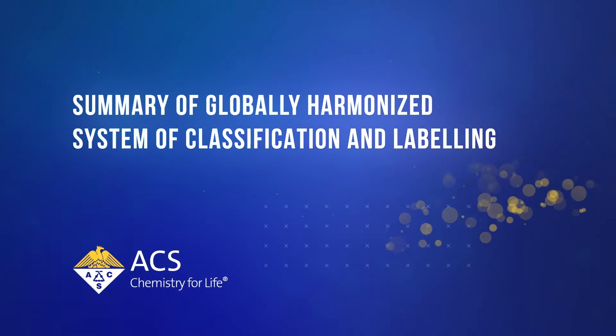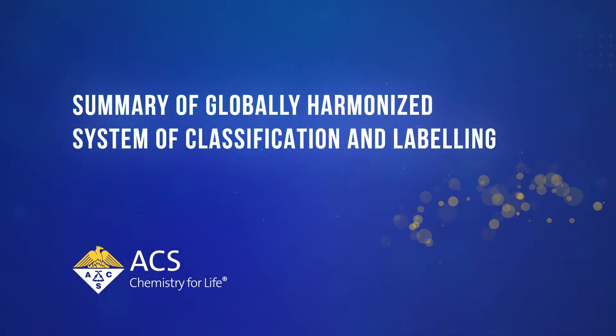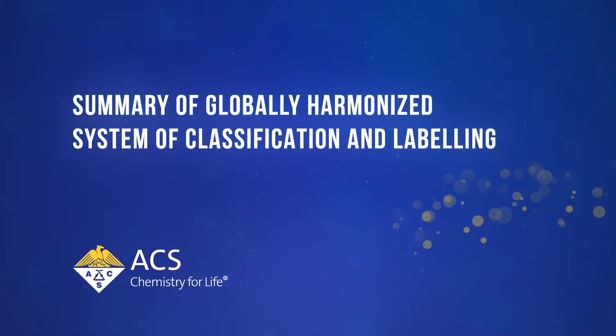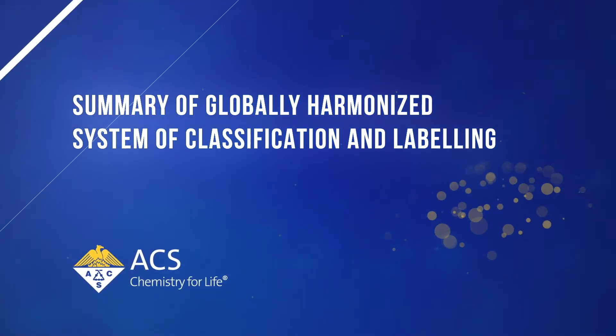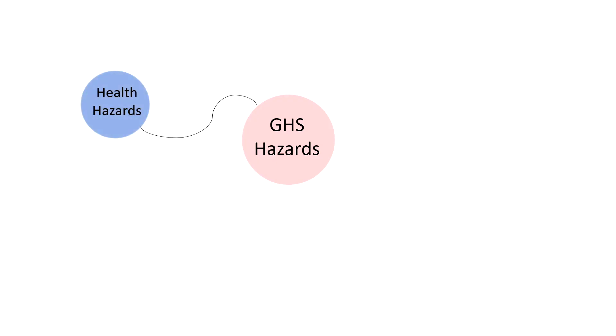In the globally harmonized system of classification and labeling, abbreviated GHS, chemical hazards are placed into three broad groups. Chemicals in the health hazard group cause or are anticipated to cause injury, illness, or disease in humans.